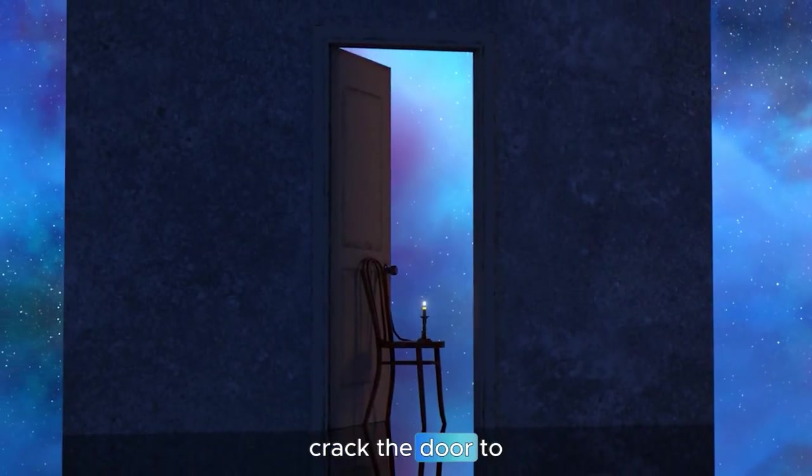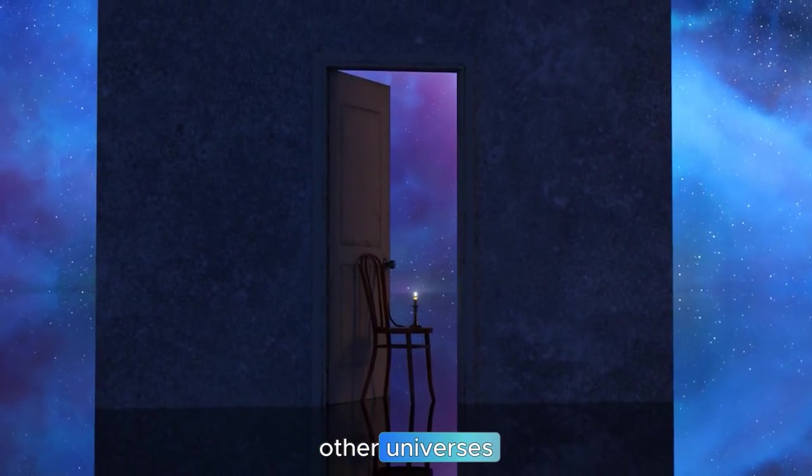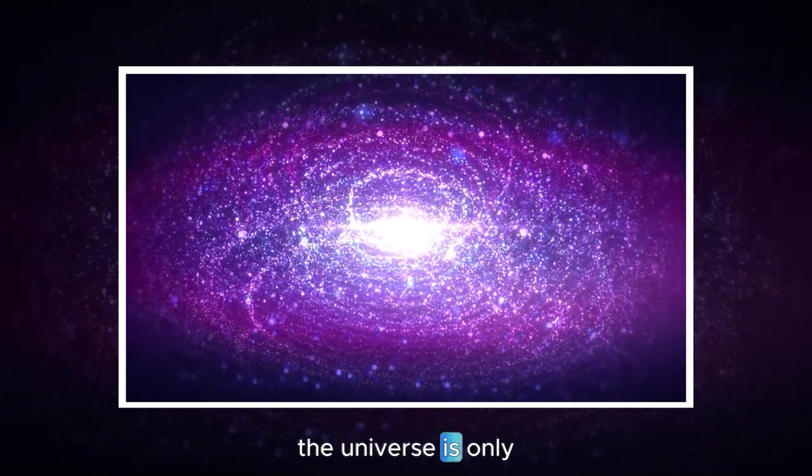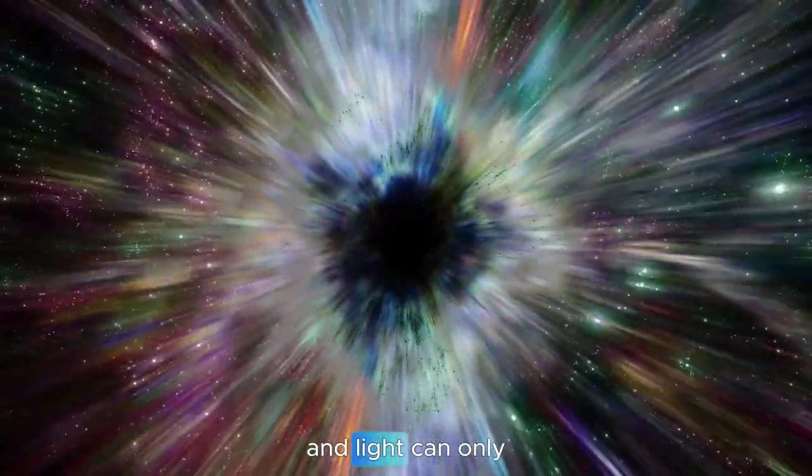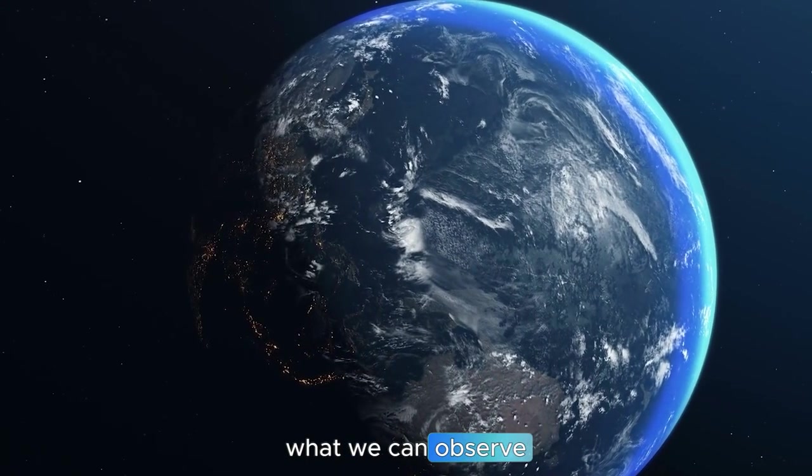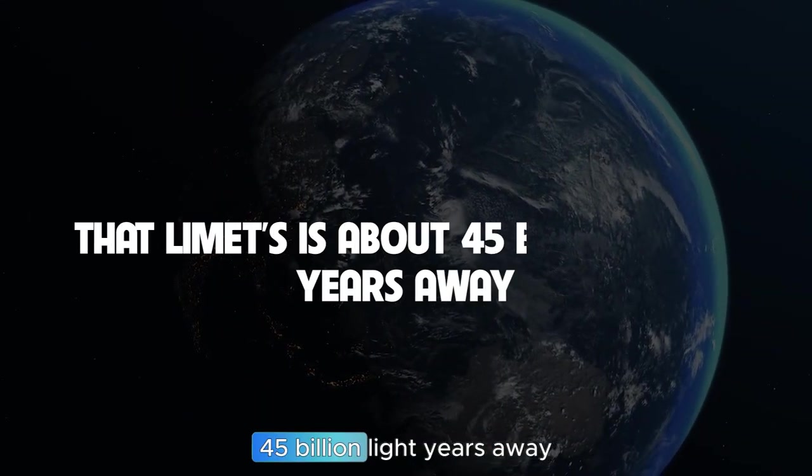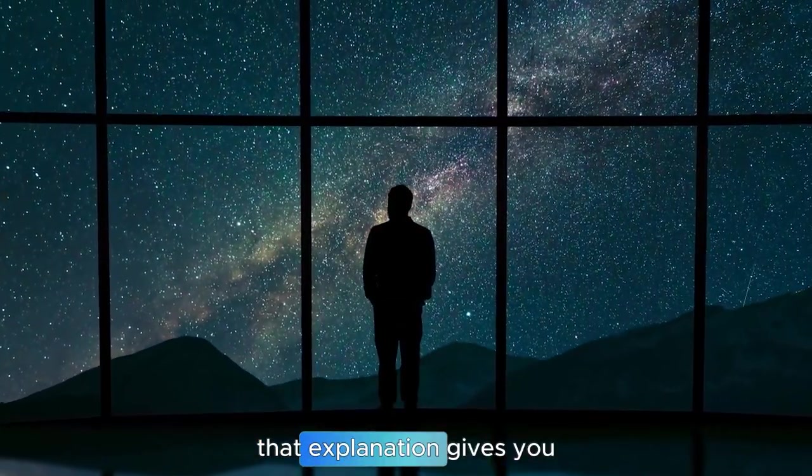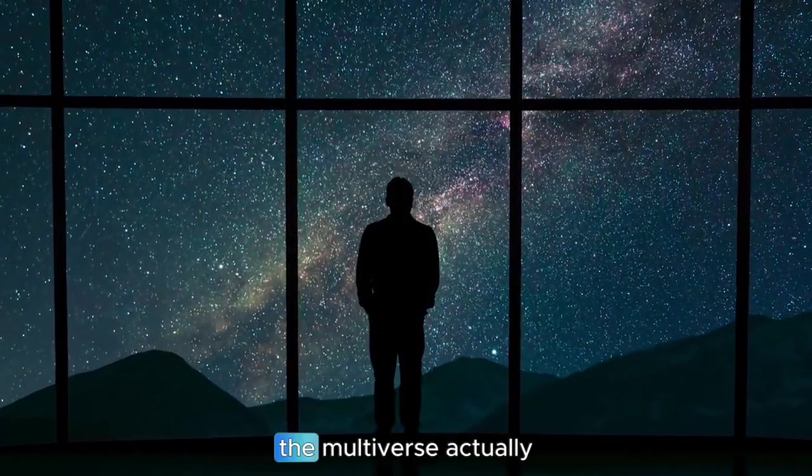One way to do that is to recognize that the universe is only so old and light can only travel at a finite speed. So, there's a limit to what we can observe in the universe. That limit is about 45 billion light years away. However, that explanation gives you a very weak vision of the multiverse.